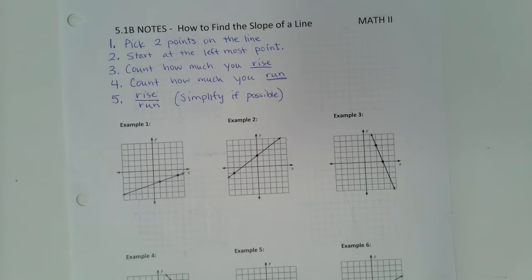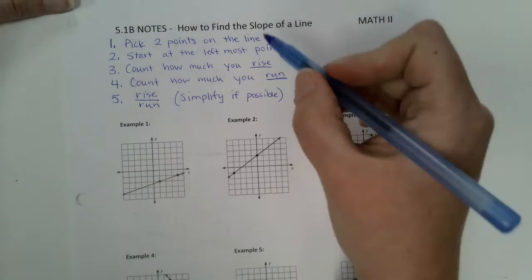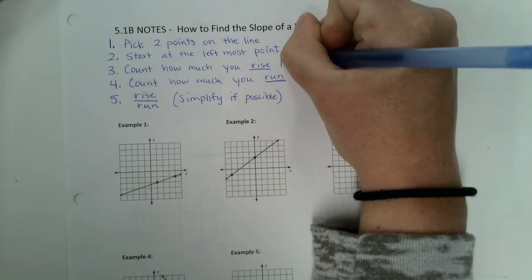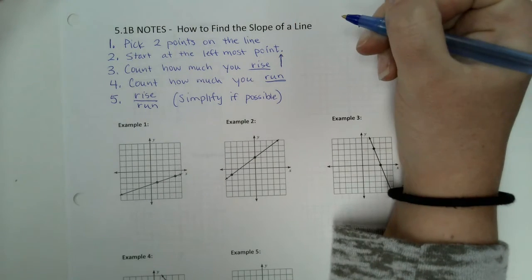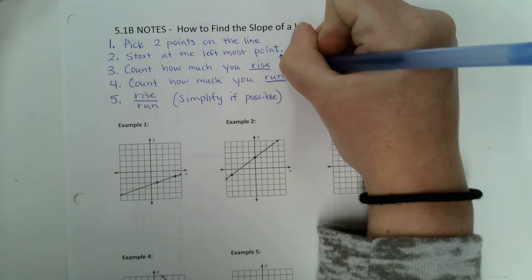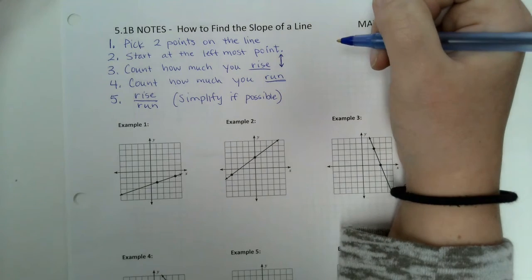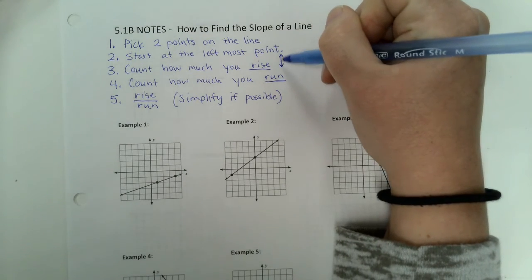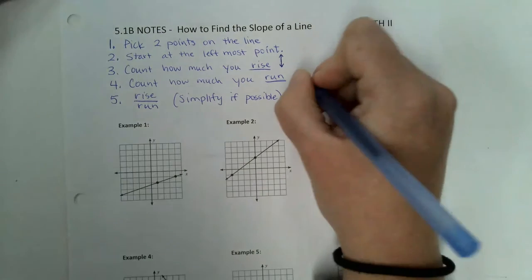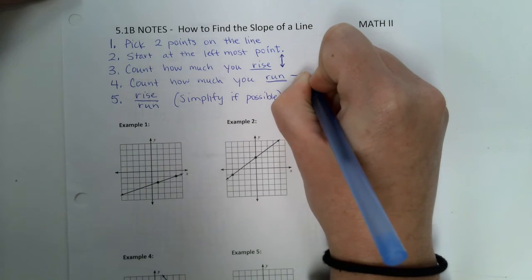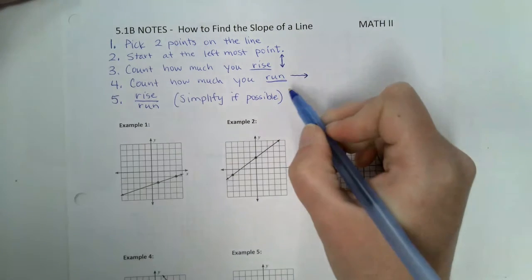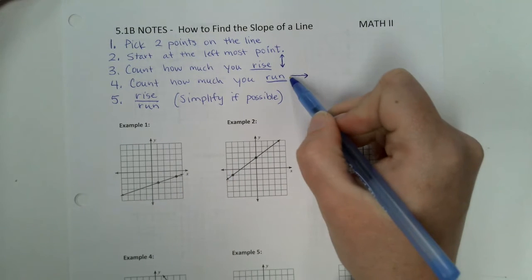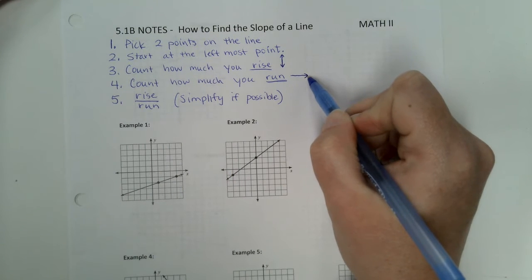Let me clarify a little bit on the rising and the running. When I say rise, normally that means going straight up, but sometimes we will also go down. When I say 'rise down' — that doesn't really make sense, but it just means go down. So rising will be up or down. Running is always going to go to the right because since we are starting at the leftmost point, if I start on the left, I'm always going to run to the right.